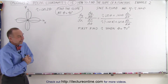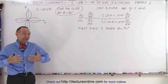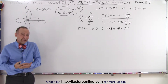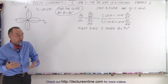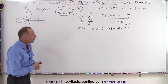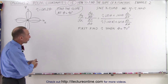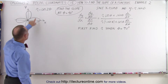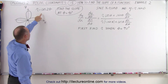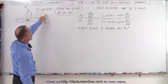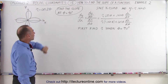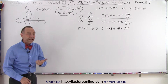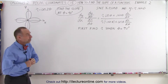Welcome to our lecture online. To give us a better feel and better understanding of how to find the slope of a polar function, we're going to do a different example. Here we have the equation r equals the cosine of 2 theta, and we're trying to find the slope when the angle is equal to 90 degrees.